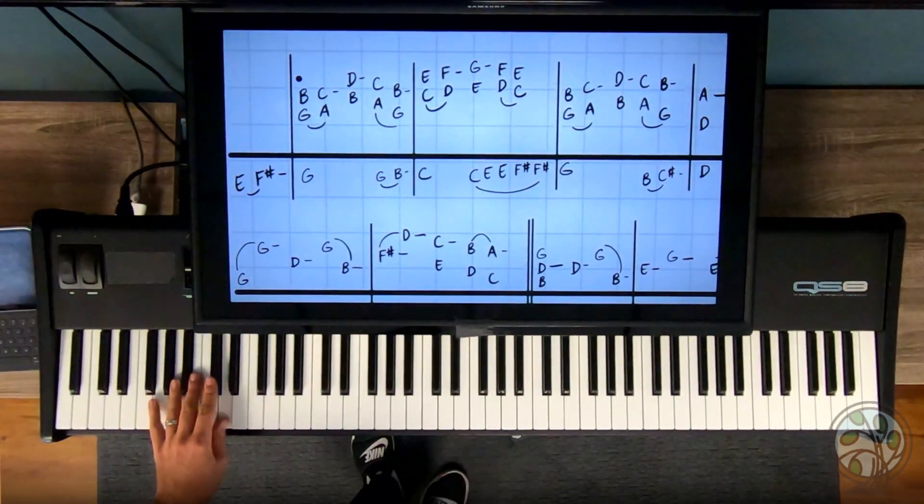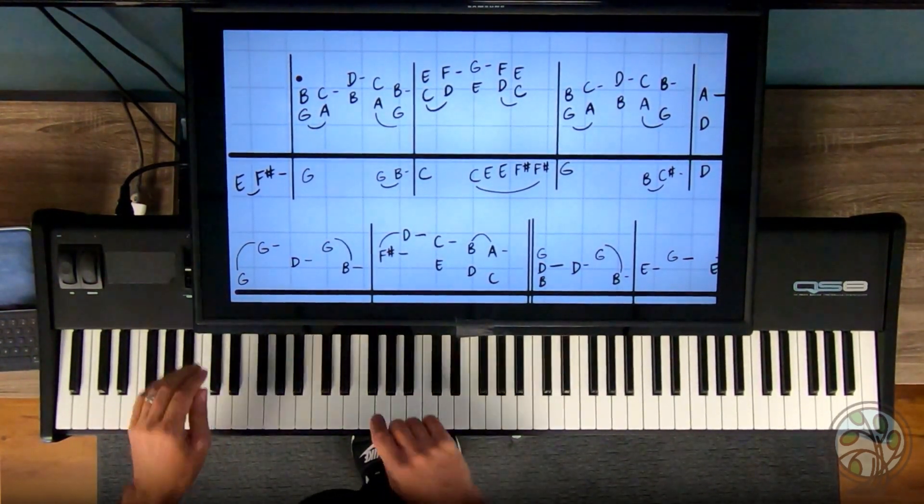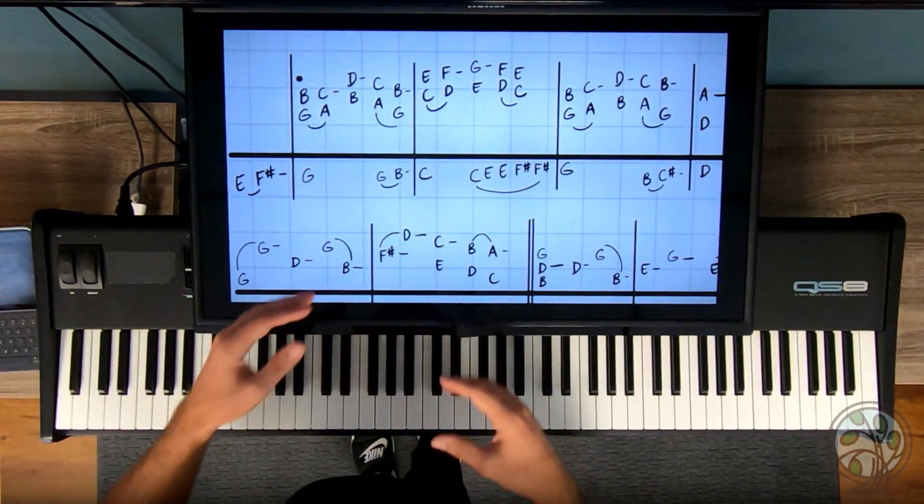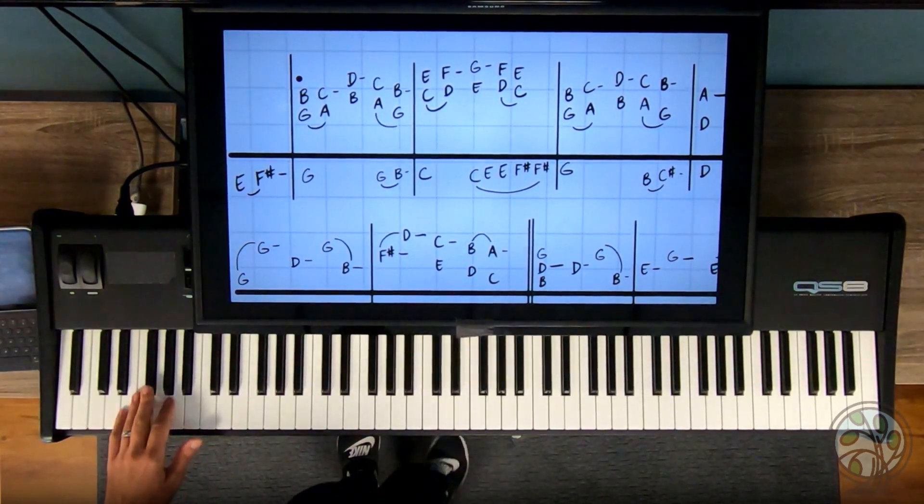1, 2, 3. B, C sharp. D is the last thing. B, C sharp, D. 3, 2, 1. Now normally I'd go, you know, one measured right hand. We put them together and then left, put them together.